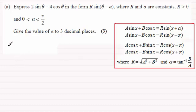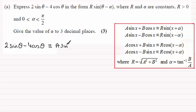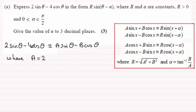For this one, we take the expression 2 sin θ minus 4 cos θ and can see it is identical in form to a sin θ minus b cos θ, where clearly a is 2 and b is 4. It's not minus 4 because we've already got that minus sign accounted for, so b equals 4.